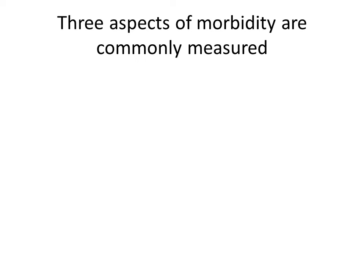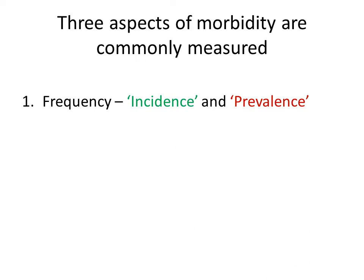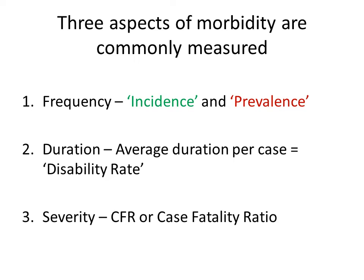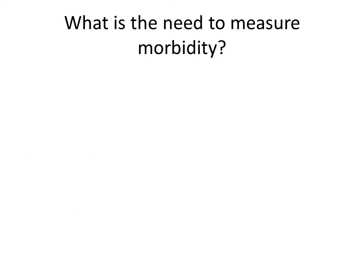Three aspects of morbidity are commonly measured. First is frequency — in epidemiology, frequency means the amount of disease, measured in terms of incidence and prevalence. Second is the duration of the disease, expressed as the average duration per case, known as the disability rate. Third is the severity of the disease, measured by the case fatality ratio.